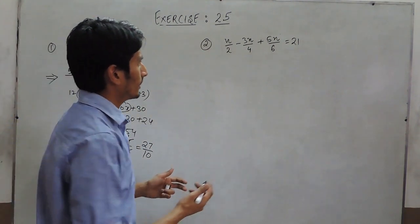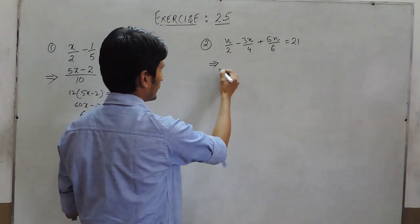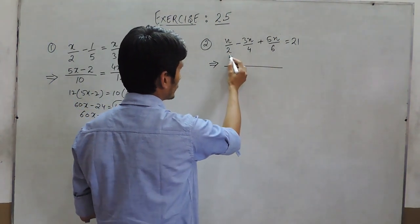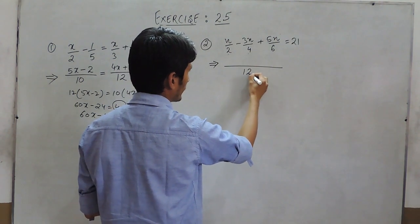In another question, to solve this, we have to take the LCM. We know that the LCM of 2, 4, and 6 is 12.